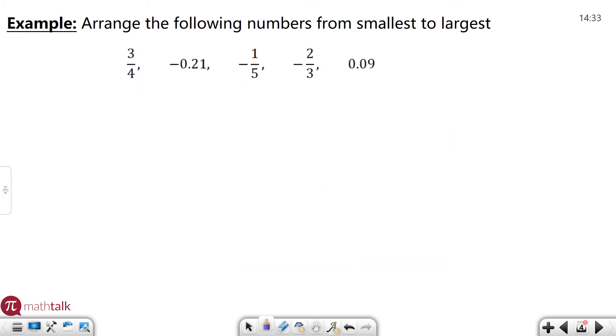Let's look at one more example. This time we have fractions and decimals, but we also have negative numbers. Remember, the more negative a number, the smaller its value, and it asks you to arrange them from smallest to largest. So let's go ahead and change them all to decimals.